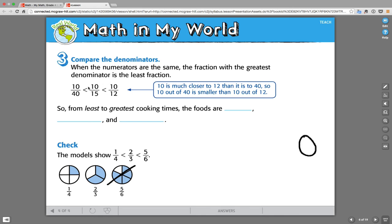Let's go to the next clip and just put these in order here. Ten is much closer to twelve than it is forty. So ten out of forty is smaller than ten out of twelve. So from least to greatest cooking times, the foods are rice, enchiladas, and then the longest being lasagna. One-fourth, two-thirds, and five-sixths. And you can see the little models there to show how that works and to check it.